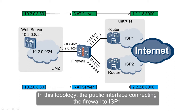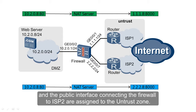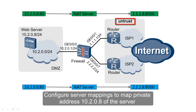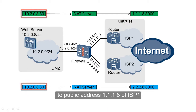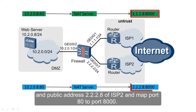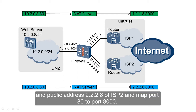In this topology, the public interface connecting the firewall to ISP1 and the public interface connecting the firewall to ISP2 are both assigned to the untrust zone. Configure server mappings to map private address 10.2.0.8 of the server to public address 1.1.1.8 of ISP1 and public address 2.2.2.8 of ISP2, and map port 80 to port 8000.